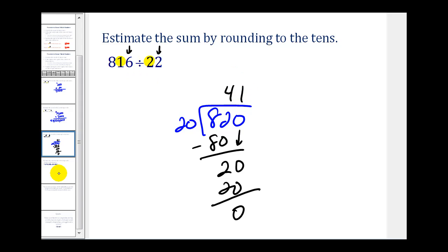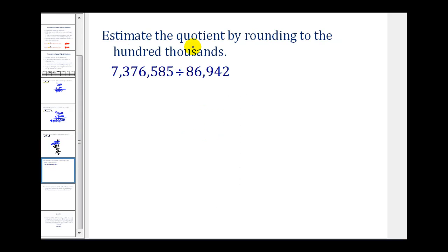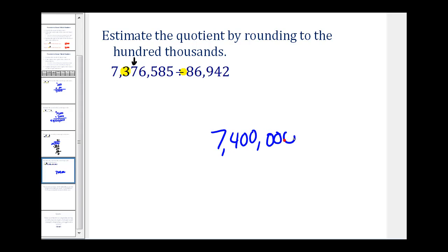Let's try another division problem. Here we'll round to the hundred thousands. For the first number, the 3 is in the hundred thousands. On the second number, there isn't a digit in the hundred thousands, but if there were, it would be right here. We use the digit to the right to determine whether to round up or down. The 7 tells us to round up, so we round to 7,400,000. The 8 tells us to round up — there's really a zero there, so we increase it to 1, giving us 100,000.